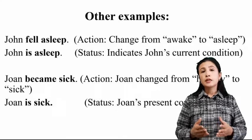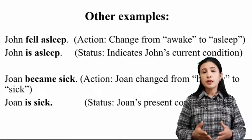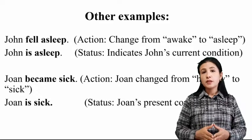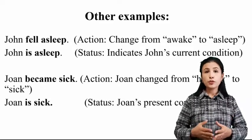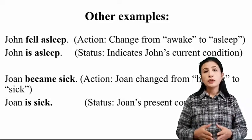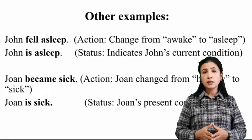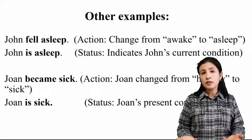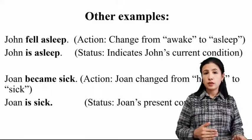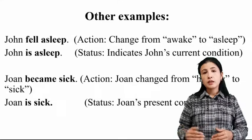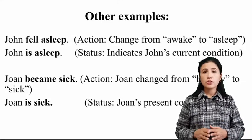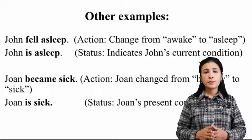'John became sick' — and the next sentence — 'John is sick.' In these two sentences: 'John became sick' is an action because John changed from healthy to sick. 'John is sick' is a current condition — just now he is sick.